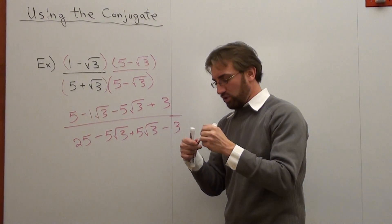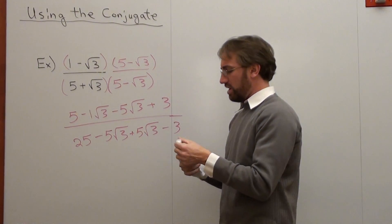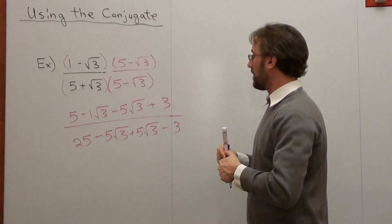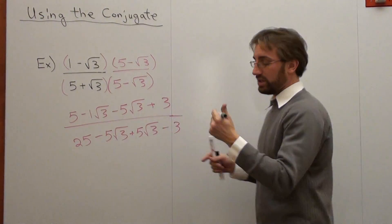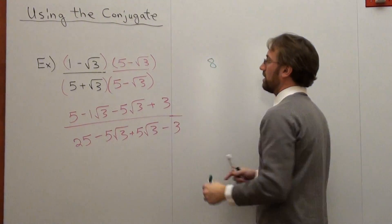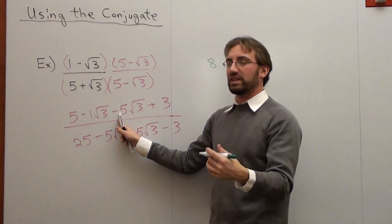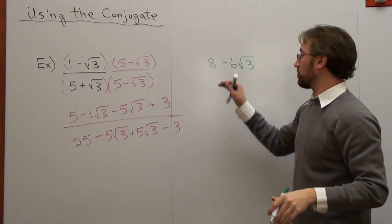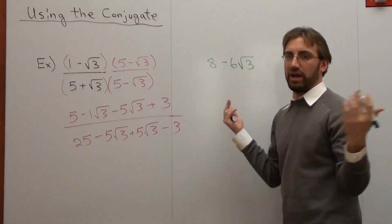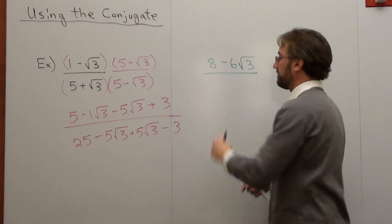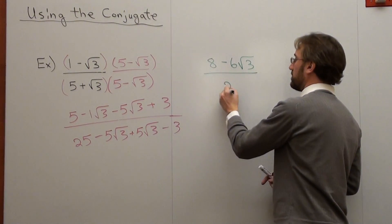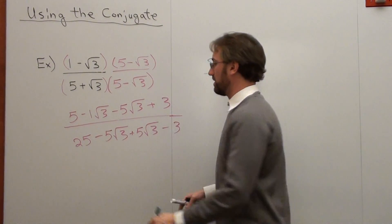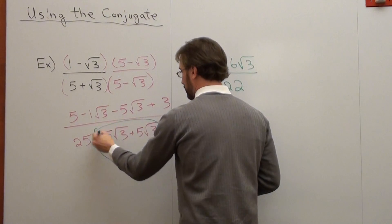Let's simplify this. That'll be the most fun of all. Let's add like terms. 5 plus 3 is 8. Negative 1 square root 3 subtracted by 5 square root 3 is negative 6 square root 3. And you can't combine them because they're not like terms. One is a natural number and the other is a number with a radical. Over 25 minus 3 is 22. And negative 5 square root 3 plus 5 square root 3 is cancelled out.